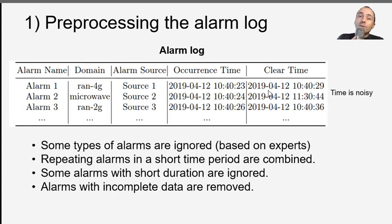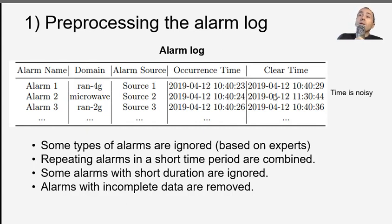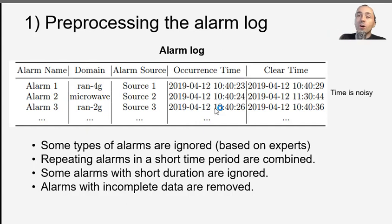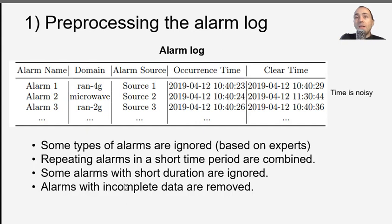The first step is to pre-process the alarm log. We have alarms with the device source, the time it appeared and was cleared, and the domain of the network. One important thing is that the time is noisy — we cannot be exactly sure about the timestamp because of the different clocks of different devices. So we do some pre-processing: we remove some alarms based on comments from experts, combine repeating alarms that appear in a short time, ignore alarms with very short duration, and remove alarms with incomplete data.